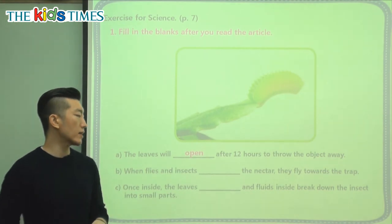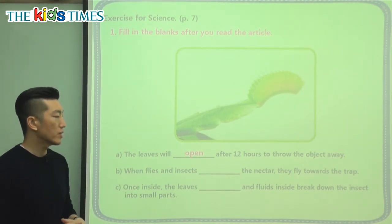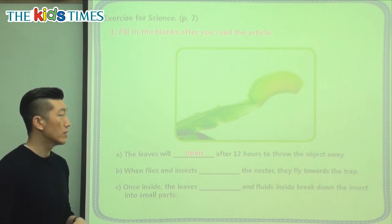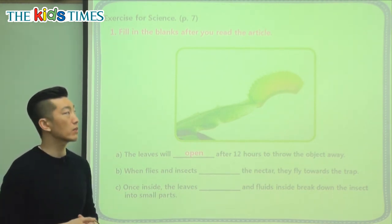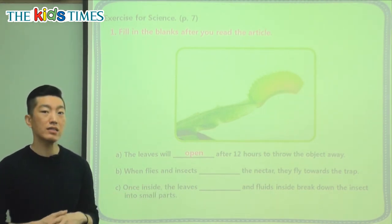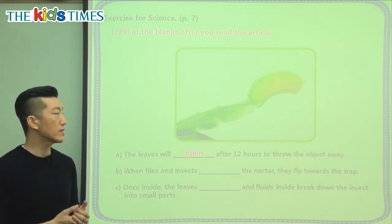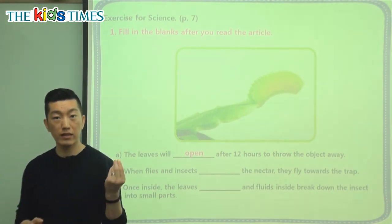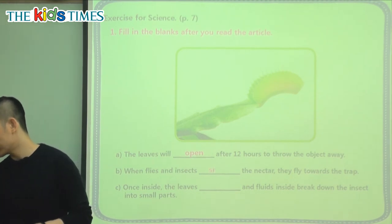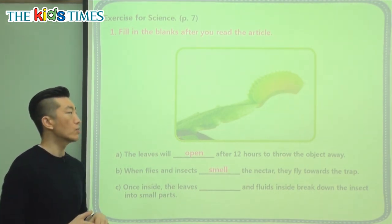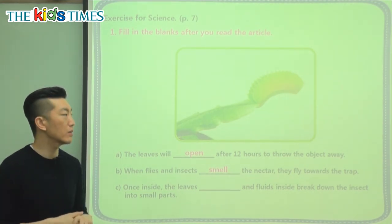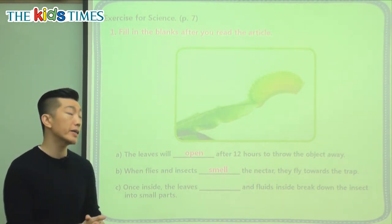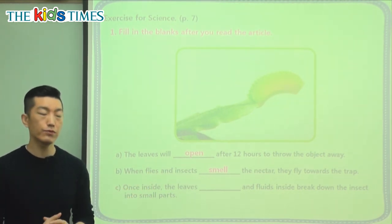When flies and insects blank the nectar, they fly towards the trap. Can they see the nectar? What is it that we talked about? A lot of bugs and insects have very strong senses, so what can they do with the nectar? That's right — they can smell it. Bugs have very sensitive smell and can detect nectar from plants from far away, knowing they can get food there.